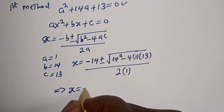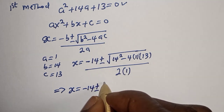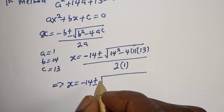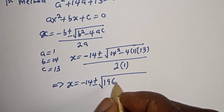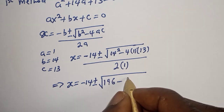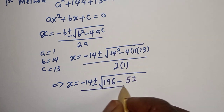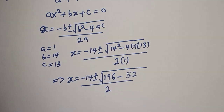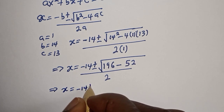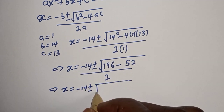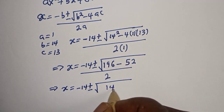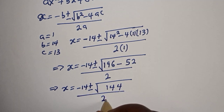s is equal to minus 14 plus or minus square root of 14 squared — that is 196 — minus 4 times 1 times 13, that is 52, over 2.